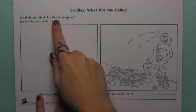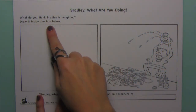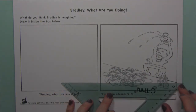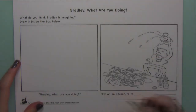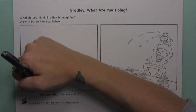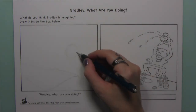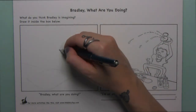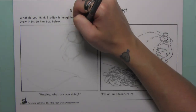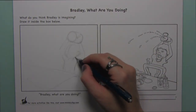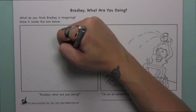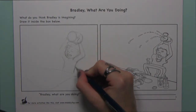Alright, here we are up close with our worksheet so you guys can get a better view of both the worksheet itself and what I'm gonna be drawing for you today. At the top of the sheet we ask: what do you think Bradley is imagining? Draw it inside the box below — and that's exactly what I'm doing right now.